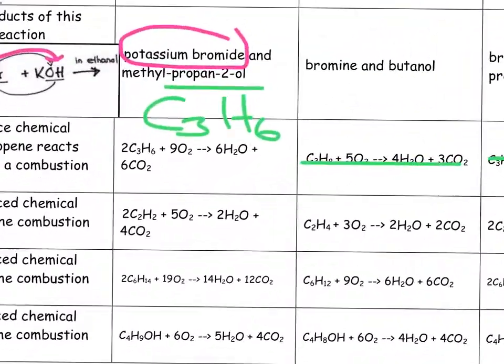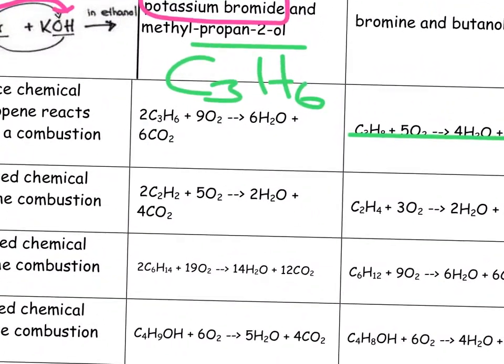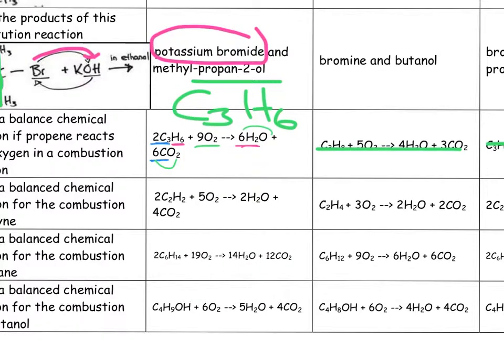Let's just try and take a look at that. So we've got 6 carbons on the left and 6 carbons on the right. We have got 12 hydrogens on the left, 12 hydrogens on the right. We've got 18 oxygens on the left and 6 plus 12, which is 18 on the right. So that does balance.